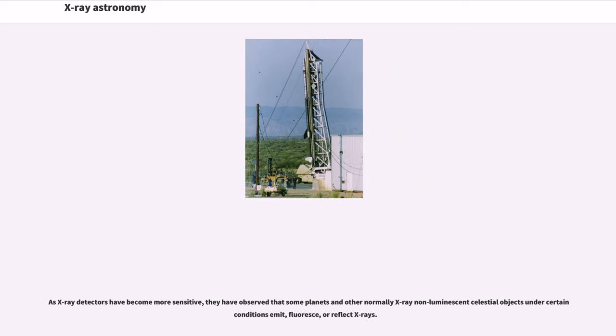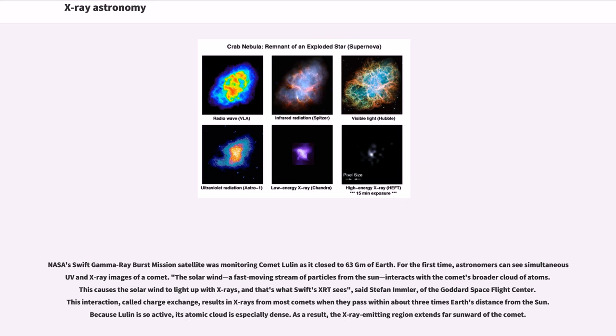As X-ray detectors have become more sensitive, they have observed that some planets and other normally X-ray non-luminescent celestial objects under certain conditions emit, fluoresce, or reflect X-rays. NASA's Swift Gamma Ray Burst mission satellite was monitoring comet Lulin as it closed to 63 GM of Earth. The solar wind interacts with the comet's broader cloud of atoms. This causes the solar wind to light up with X-rays through charge exchange. Because Lulin is so active, its atomic cloud is especially dense. As a result, the X-ray emitting region extends far sunward of the comet.